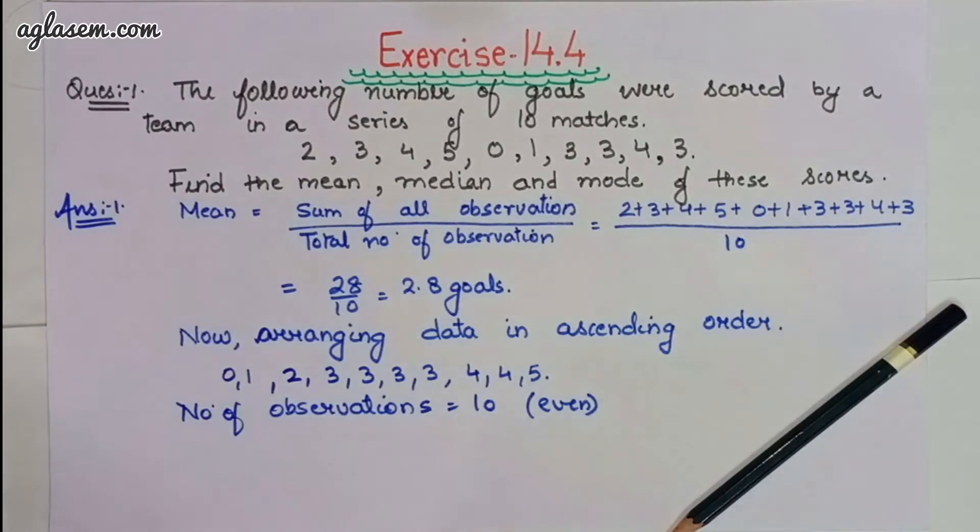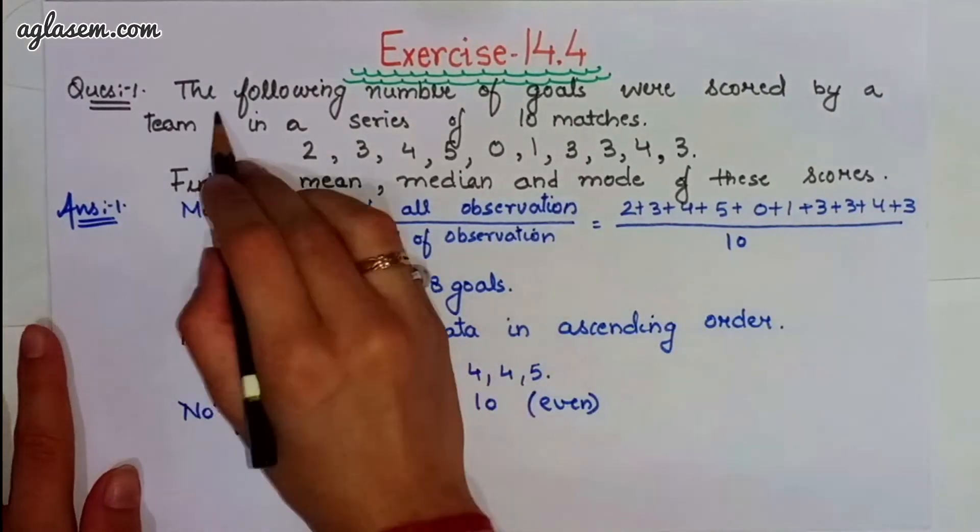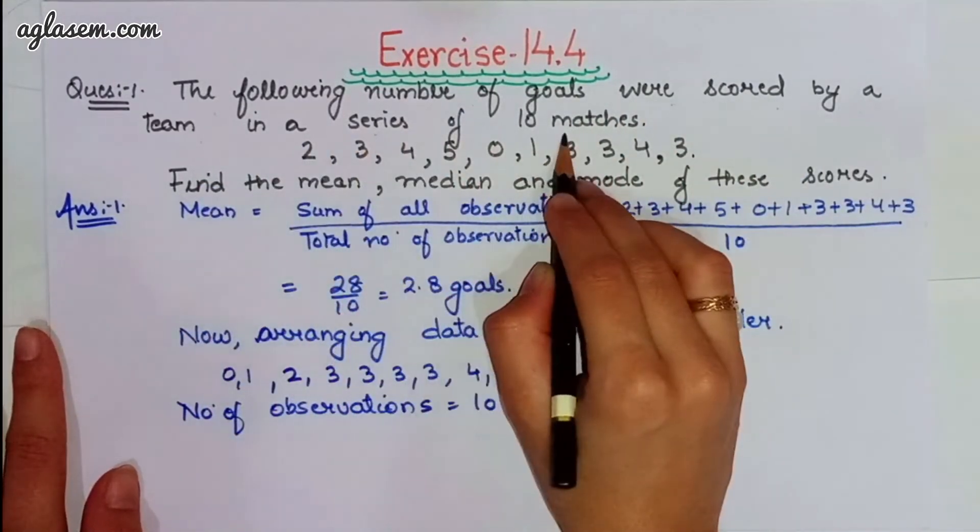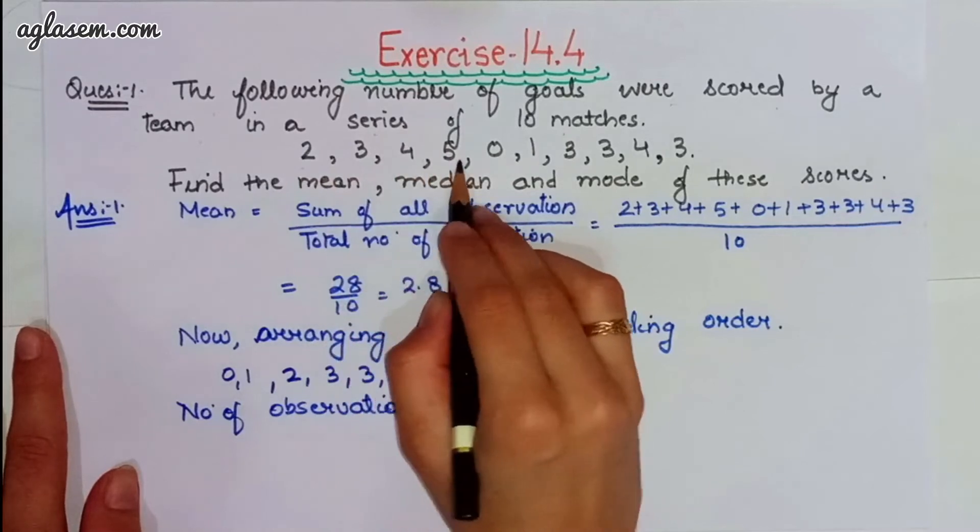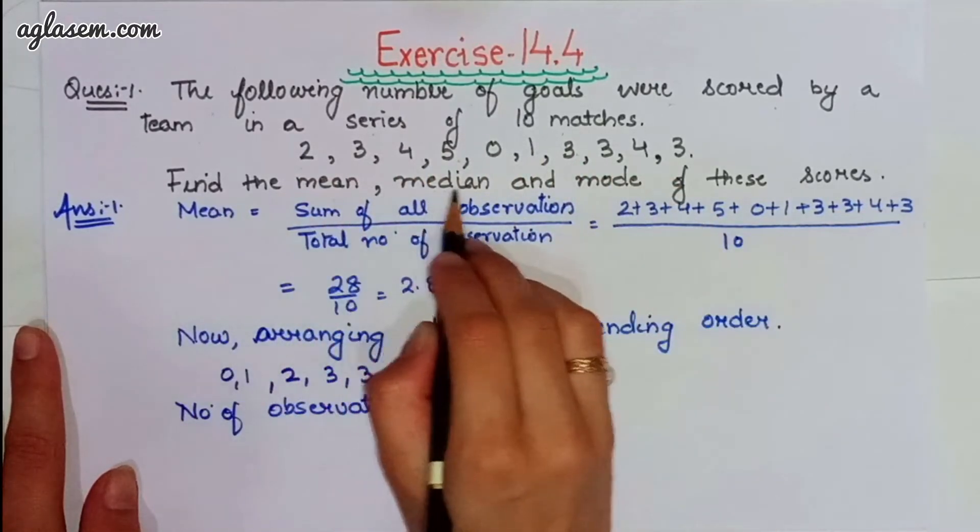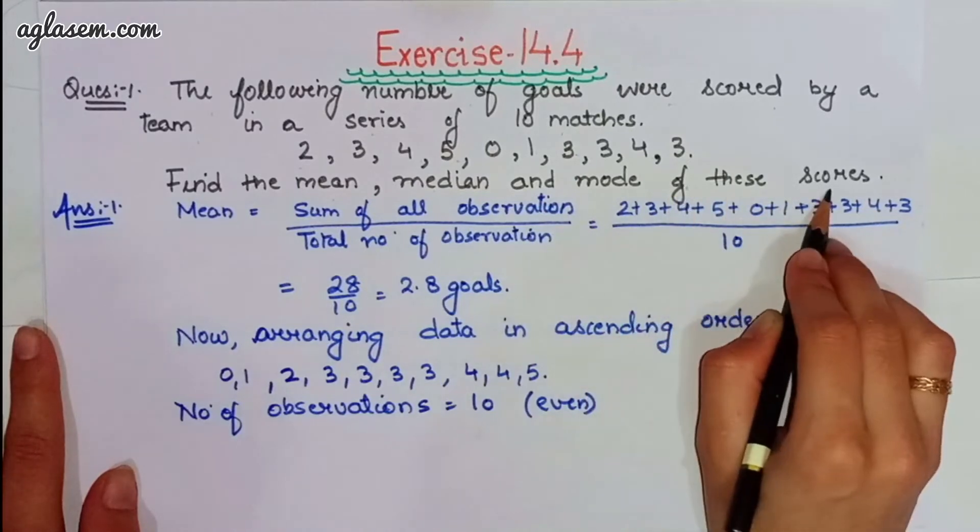Our first question says, the following number of goals was scored by the team in a series of 10 matches: 2, 3, 4, 5, 0, 1, 3, 3, 4, 3. We have to find the mean, median and mode of these scores.